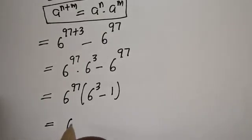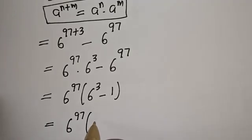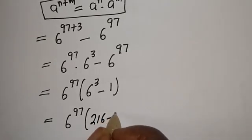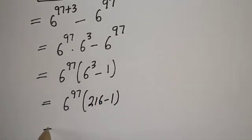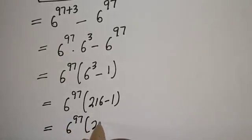Then 6 raised to power 97, bracket: 6 raised to power 3 is 216 minus 1. That is 6 raised to power 97 times bracket 216 minus 1, which equals 215.